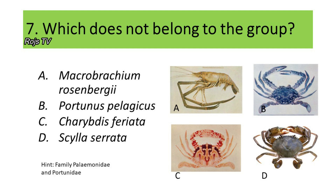These organisms could be grouped into two families: Palaemonidae and Portunidae. If your answer is A, Macrobrachium rosenbergii, you are correct. This species falls under family Palaemonidae, while Portunus pelagicus, Charybdis feriata, and C. lacerata belong to family Portunidae.